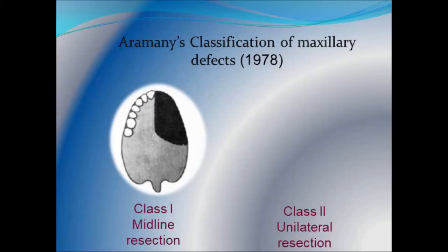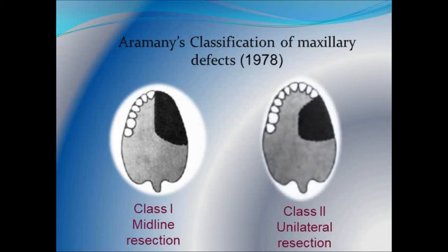Coming to the most commonly used classification of maxillary defect, which was proposed by Dr. Muhammad Aramani. He divided the defects into six categories based on the relationship of the defect to the remaining teeth. The first one is class 1, that is the midline resection — here the teeth are maintained on one side of the arch and the resection is done across the midline. This is the most frequently seen defect. The next one is class 2, unilateral resection, where the natural teeth on one side of the arch are maintained along with the anterior teeth on the contralateral side.